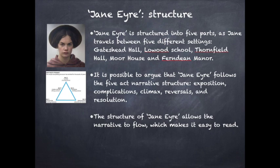It's possible to argue that Jane Eyre follows the five-act narrative structure. In the first setting you have exposition, then complications, then the climax being the non-marriage between Rochester and Jane, then reversals, and finally resolution. This structure allows the narrative flow, which is one of the things that makes Jane Eyre so easy to read.